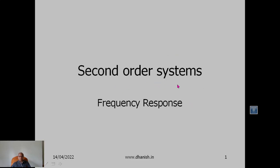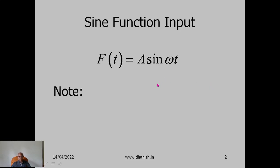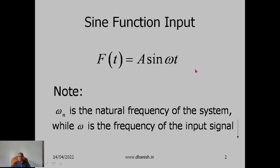The frequency response of second-order systems. The input signal is of sinusoidal form: f(t) = A·sin(ωt), where A is the amplitude and ω is the frequency of the input signal. Note that ω is the frequency of the input signal, while ωn is the natural frequency of the system — a property of the measuring instrument that remains constant for a particular instrument. ω will keep changing depending on the input signal.